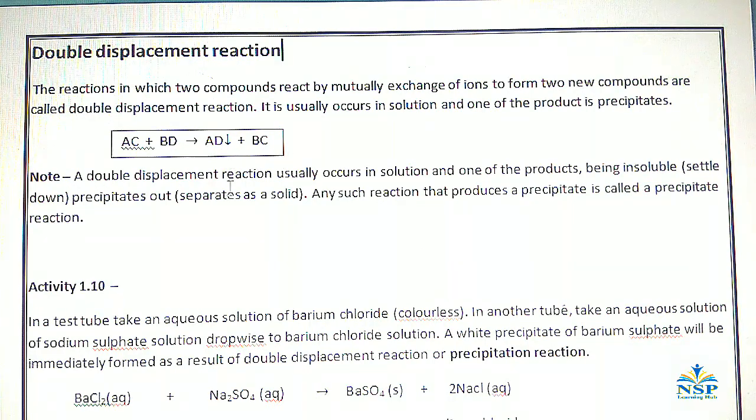Note, a double displacement reaction usually occurs in solution and one of the products being insoluble, which is settled down as a precipitate or separate as a solid. Any such reaction that produces a precipitate is called a precipitation reaction. It means double displacement reaction is also called precipitate reaction.